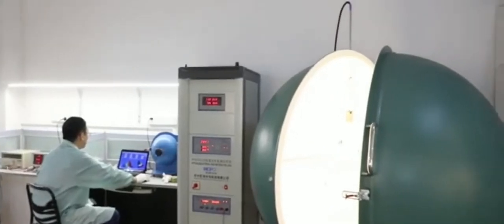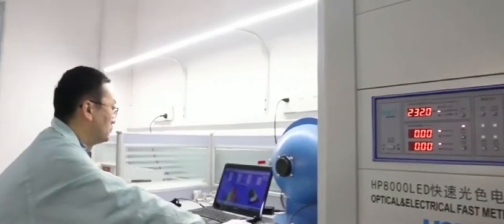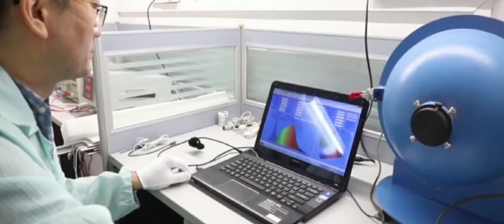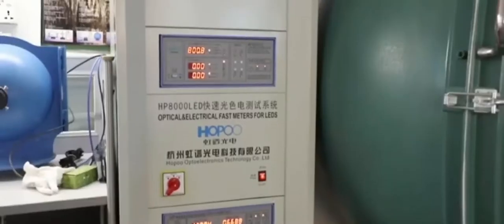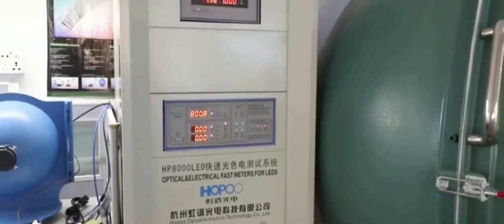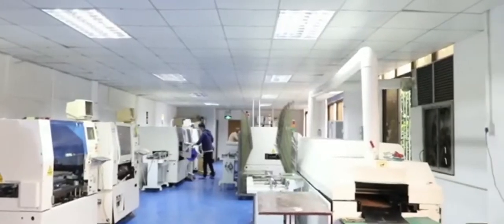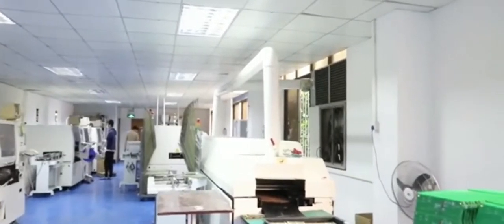Fulan Guangdian provides clients one-stop service on design and production for lighting and electronics products, including plastic extrusion, injection, SMT, aluminum extrusion, assembly, testing, and packaging.